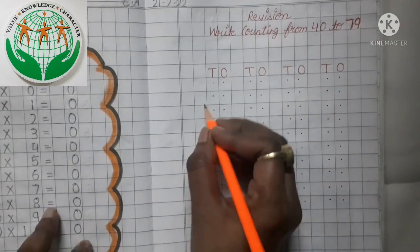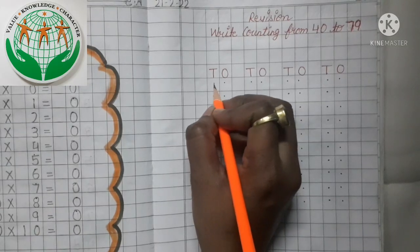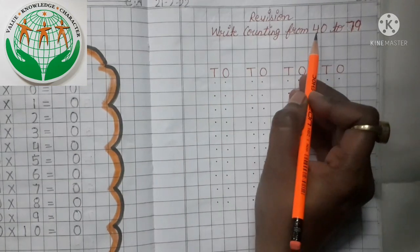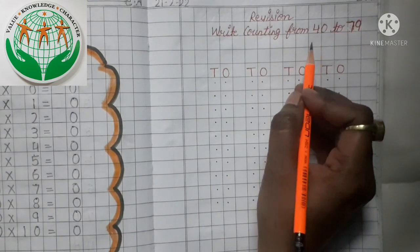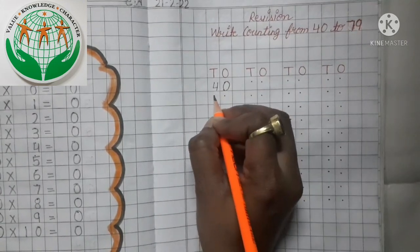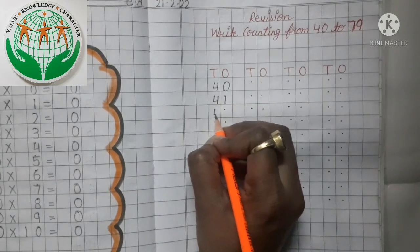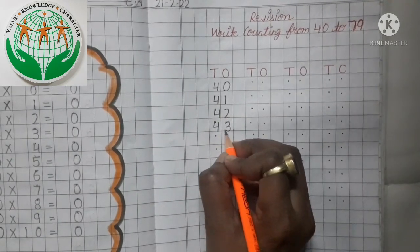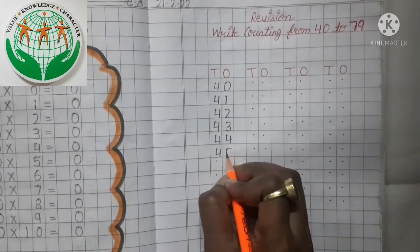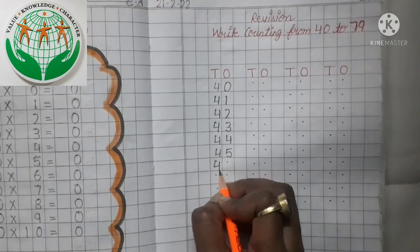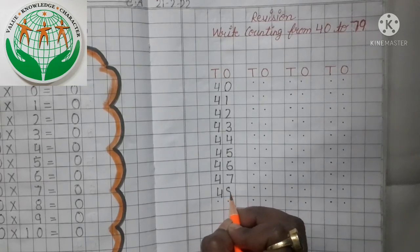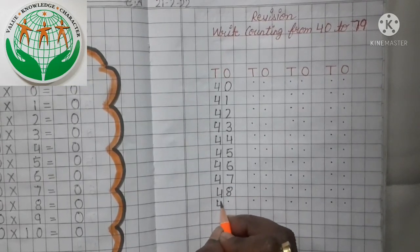So let's start kids. Firstly we write here, which number? Yes, number 40, because we will start our counting from number 40. So let's start: 40, 41, 42, 43, 44, 45, 46, 47, 48, and 49.